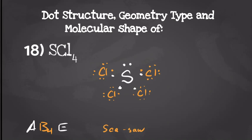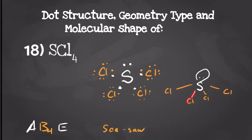Finding the dipole moment from our dot structures might be a little difficult, so when we draw our molecule this is our seesaw. Each of these chlorines serves as the fulcrum, and these chlorines are where we would sit on the seesaw. This chlorine pulling in one direction is going to cancel out with that one, and this chlorine will cancel with this one. The dipole that we see would come from our lone pair, so the dipole moment would be towards the lone pair, giving us a polar molecule.